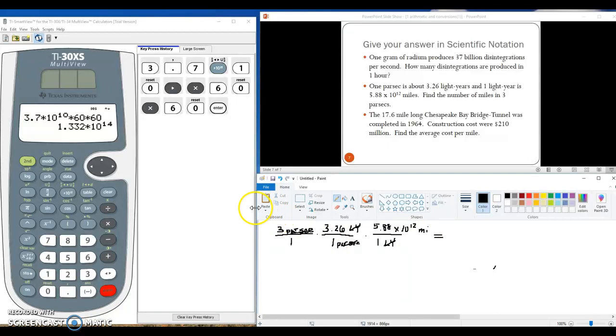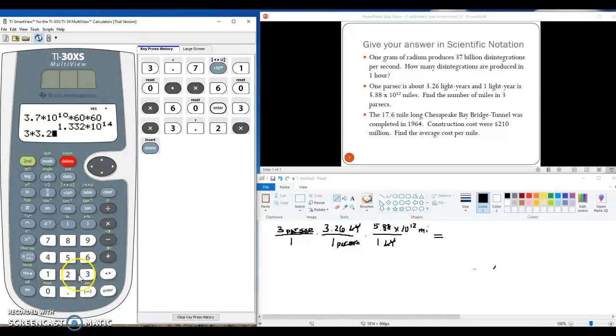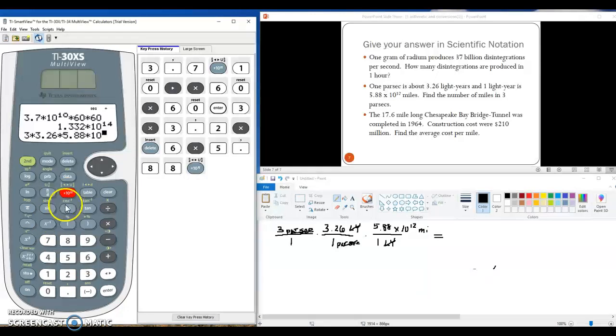So, now if I go to my calculator, I type 3 times 3.26 times 5.88. And I need this in scientific notation. So, on the TI30XIS, you'll type second and your x to the negative 1 key to get that e. And from there, you'll just type the exponent. So, the exponent that we have here is 12. Once I type it in, I hit enter.